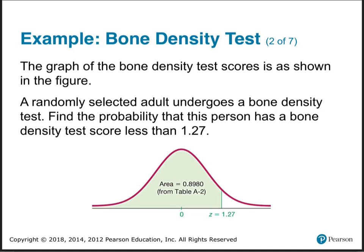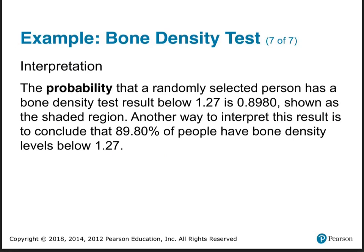Graph: bone density test score is shown in the figure. Find the probability that this person has a bone density test score less than 1.27. The probability that a randomly selected person has a bone density test below 1.27 is 0.8980.